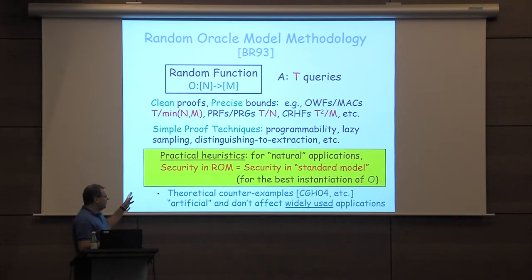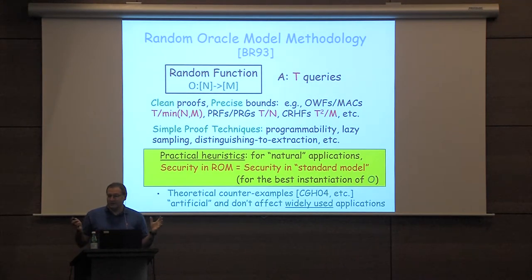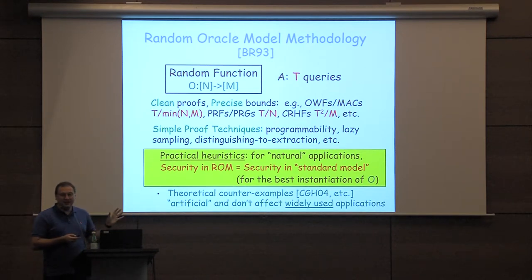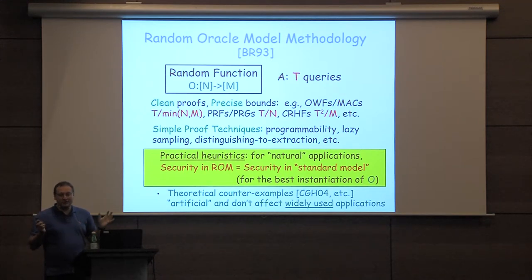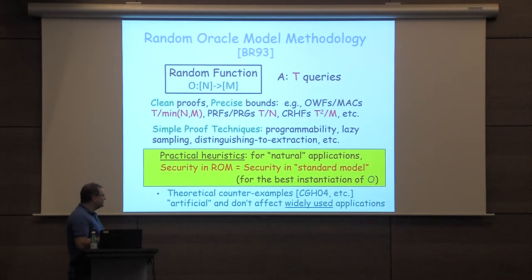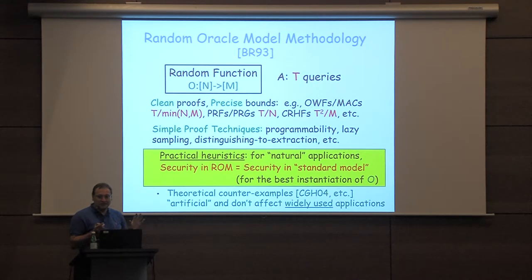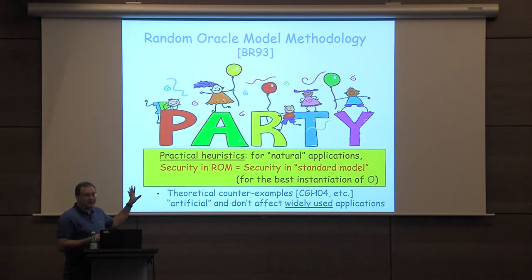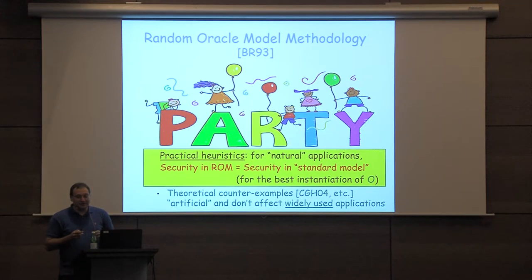As theoreticians, of course, there were a bunch of really important and influential papers saying that this is a great methodology — it might work for everything we care about — but at least in theory, there are some artificial examples where this methodology doesn't work, so you have to be careful. However, even those papers taught us a lot about non-black-box techniques. As far as I know, it doesn't affect the security of any applications actually used in real life, so it seems like we're kind of in good shape and this random oracle heuristic is still standing strong.